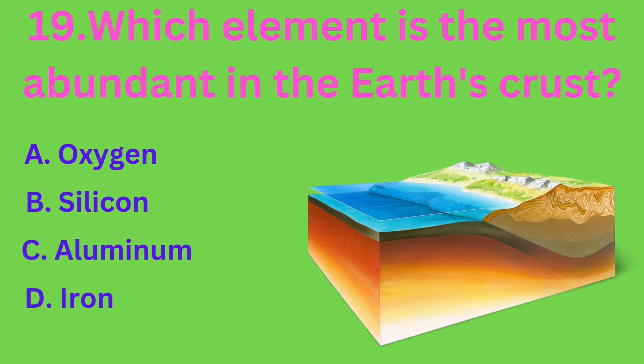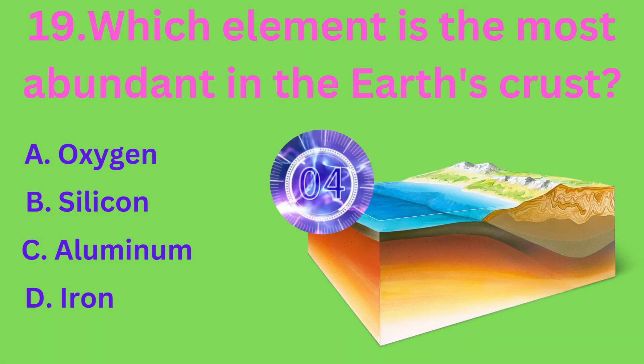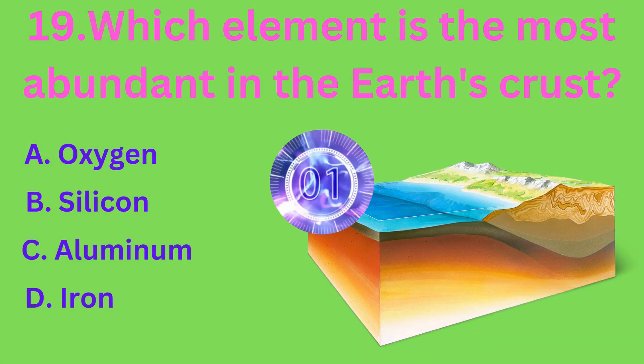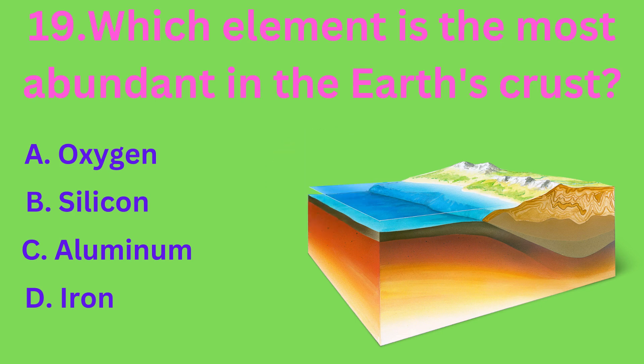Which element is the most abundant in the Earth's crust? The correct answer is option A, Oxygen.